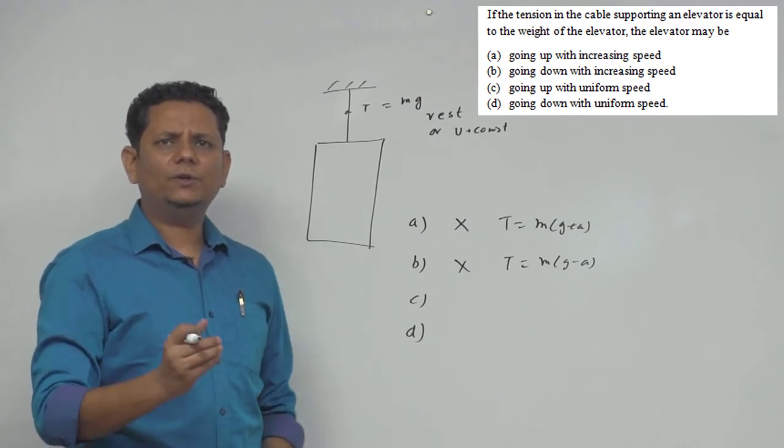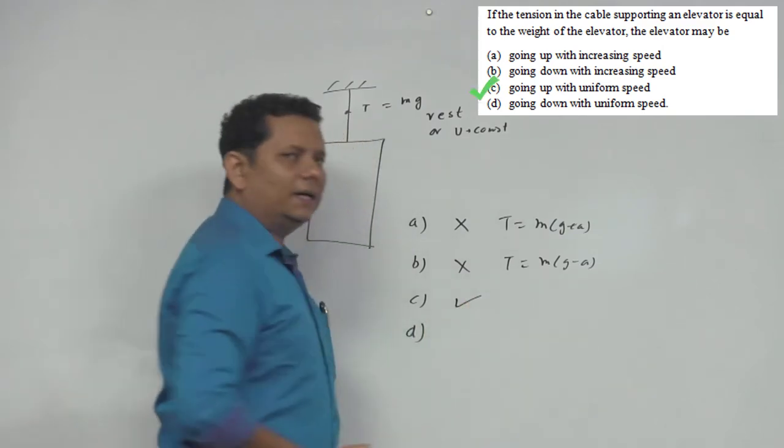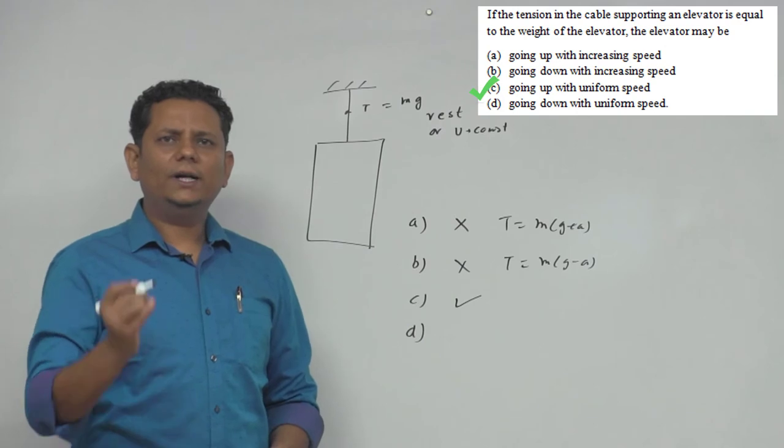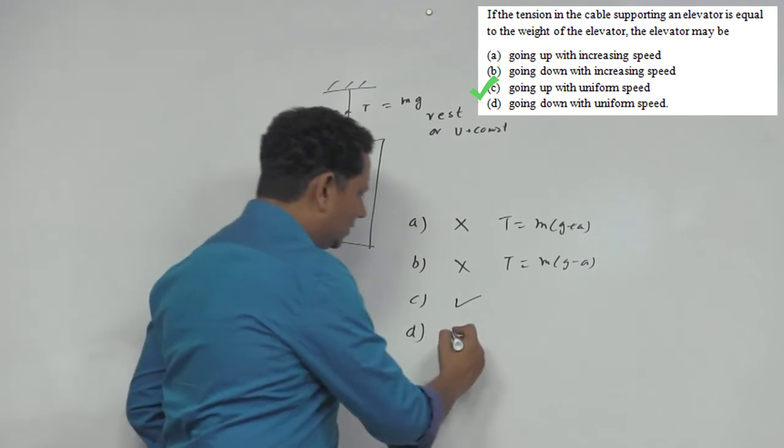Third option is going up with uniform speed. Now this would be a correct choice. Option D is going down with uniform speed. This is also a correct choice.